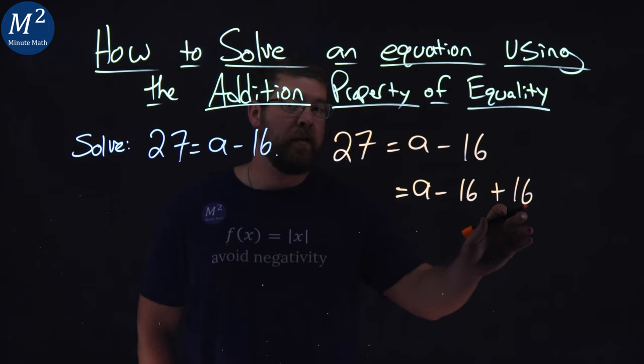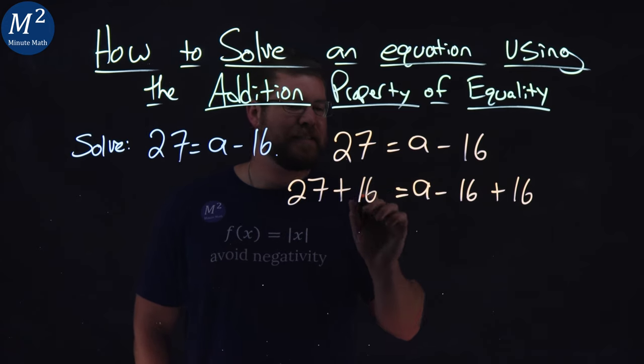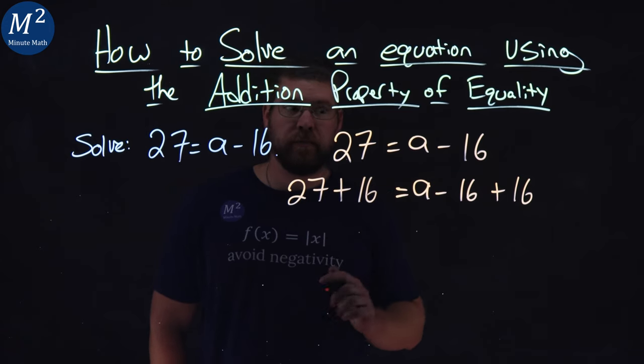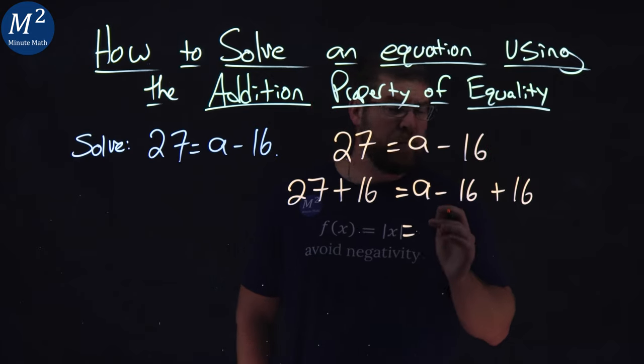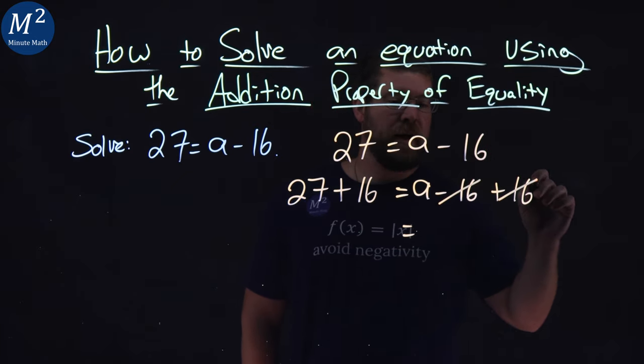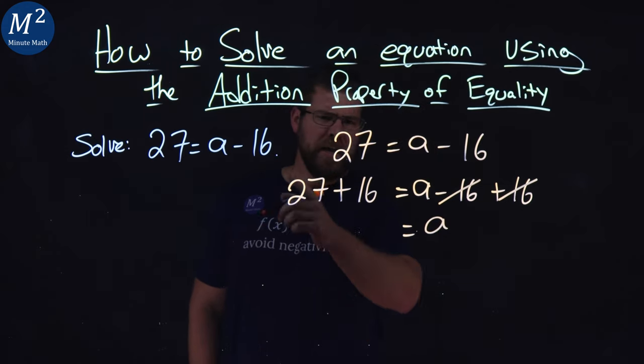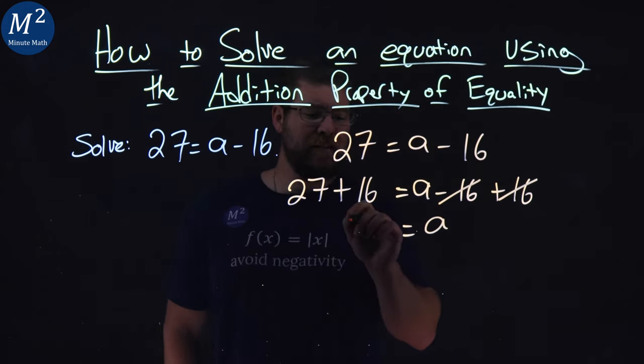But again, I have to do that to both sides of the equation. So, 27 here plus 16. Make sure it's to both sides. Right-hand side is pretty easy. Negative 16 and positive 16, they cancel each other out, and we're left with just a, which is what we wanted. Now, 27 plus 16 is 43.